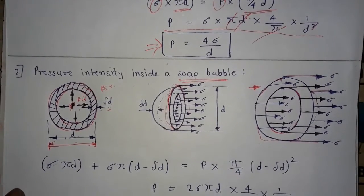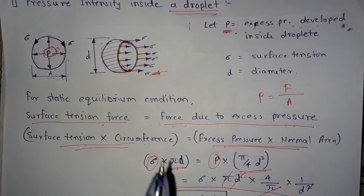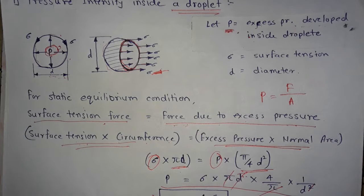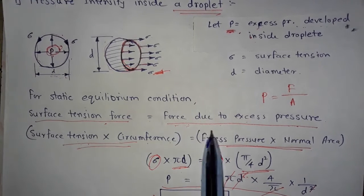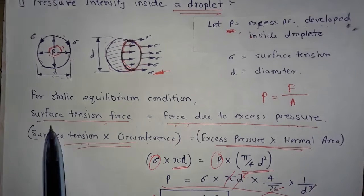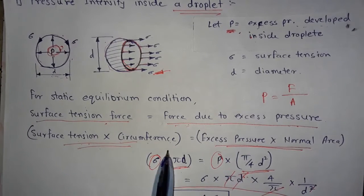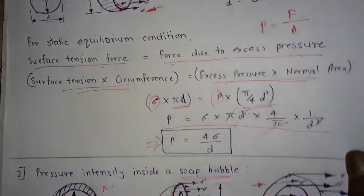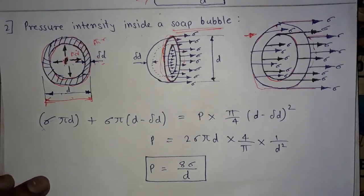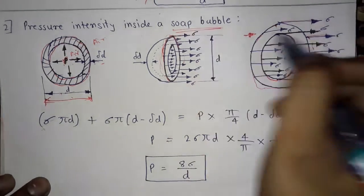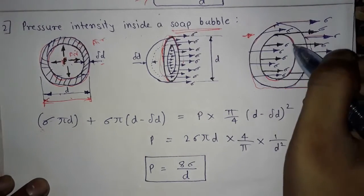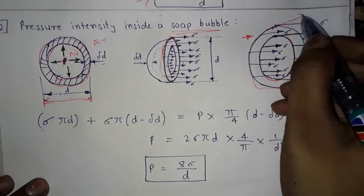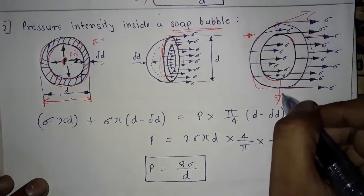In this case also we require the static equilibrium condition to derive the excess pressure equation. Surface tension force should be equal to the force due to excess pressure. Surface tension force is given by surface tension multiplied by circumference, and force due to excess pressure is given by excess pressure multiplied by normal area. Since surface tension acts on both the outer and inner periphery, we need to calculate and add both forces.